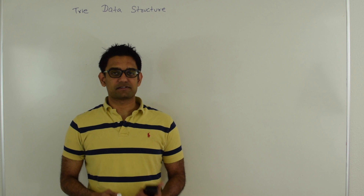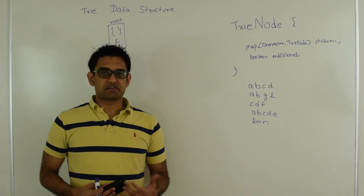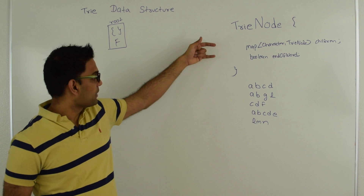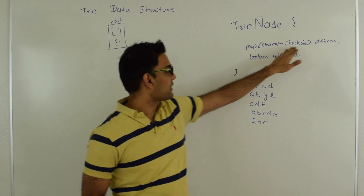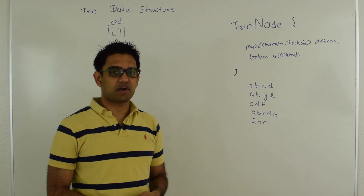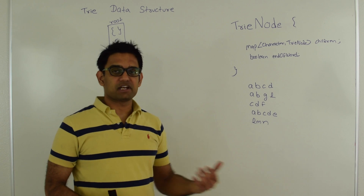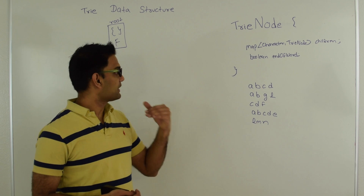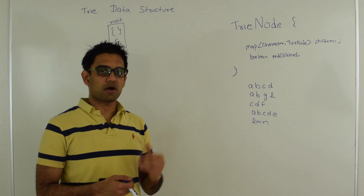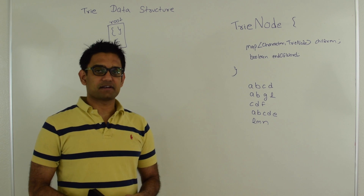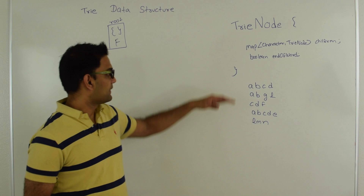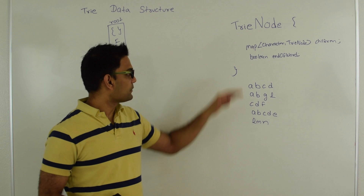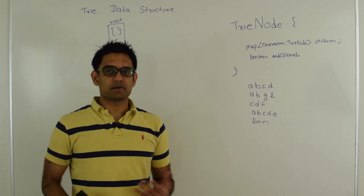Next let's talk about how to do insertion into a Trie. A Trie is a tree data structure made up of collections of Trie nodes. Every Trie node has two main components: a map where the key is a character and the value is a Trie node, used to establish the parent-child relationship, and a boolean end-of-word indicating whether the character represented by this Trie node is an end of word or not. If your character set consists of just lower cases or upper cases, you could replace this map with an array of size 26, but for generalization I am using a map so it also works with, for example, Unicode character sets.